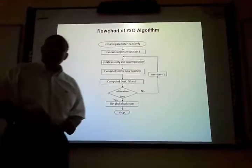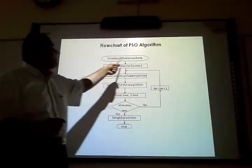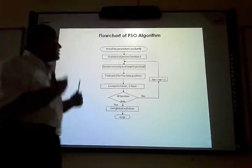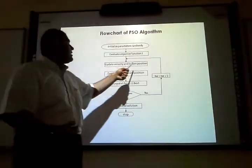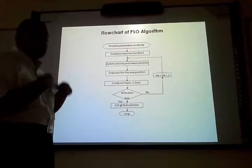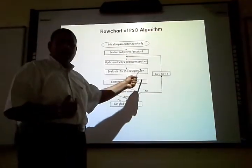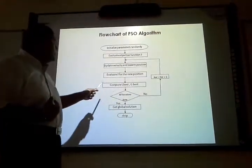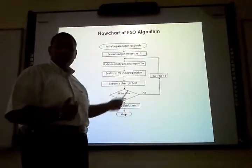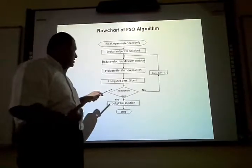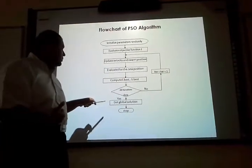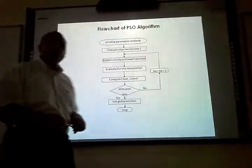Particle Swarm Optimization has a simple flowchart. We initialize the parameters randomly, then we evaluate the objective function, then we update the velocity and the swarm position, then we evaluate again the objective function, compute local best and global best, and repeat the process for all iterations. Once all iterations are done, we get the global solution to the problem.